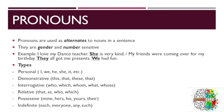Demonstrative pronouns are used to indicate the place of a particular thing or a person. For example, 'this cake that is on the table' or 'that bag which is under the cupboard.'